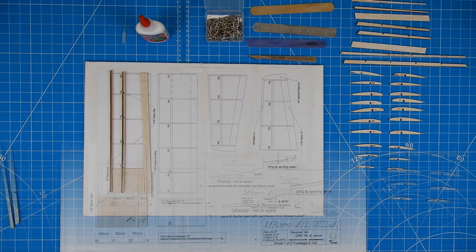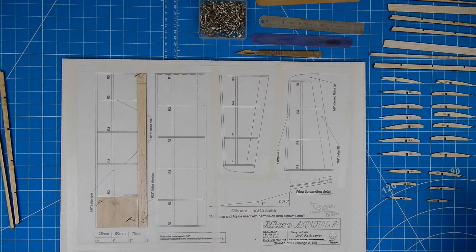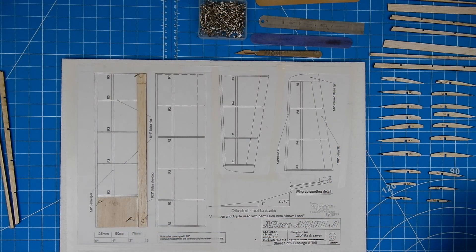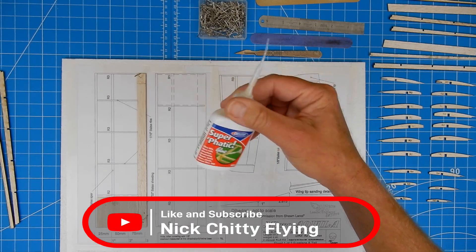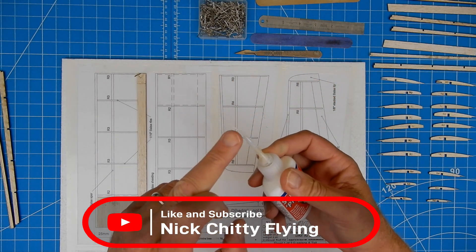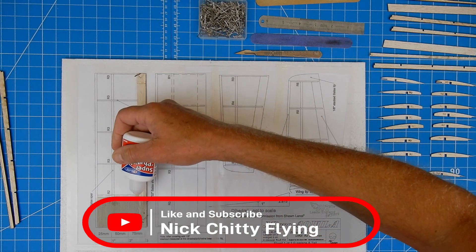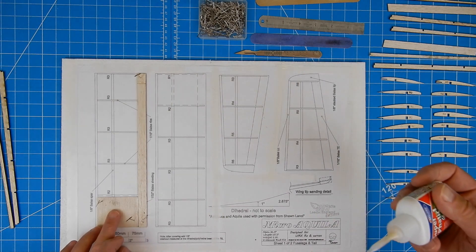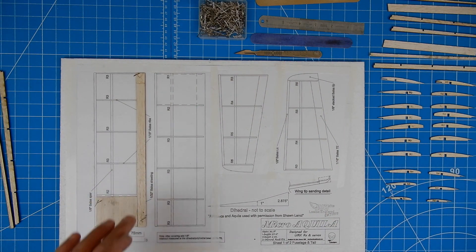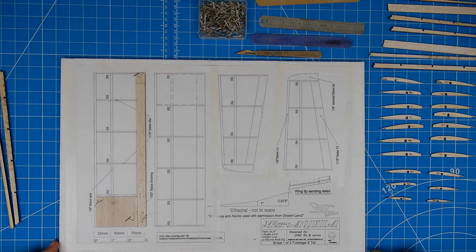I'm going to fit the ribs as we go along. Okay, so as before, I'm going to use this super phatic glue, which I really like, just using the nozzle. So I'm just gluing the bottom sheet to the trailing edge as the first step.